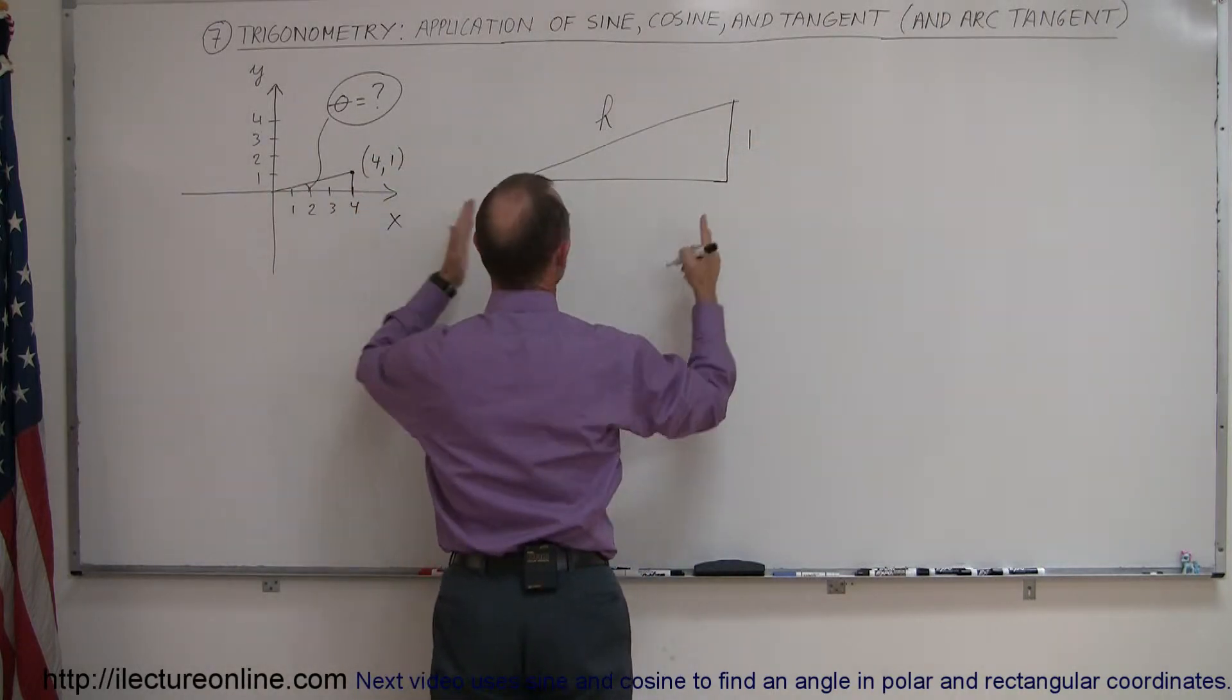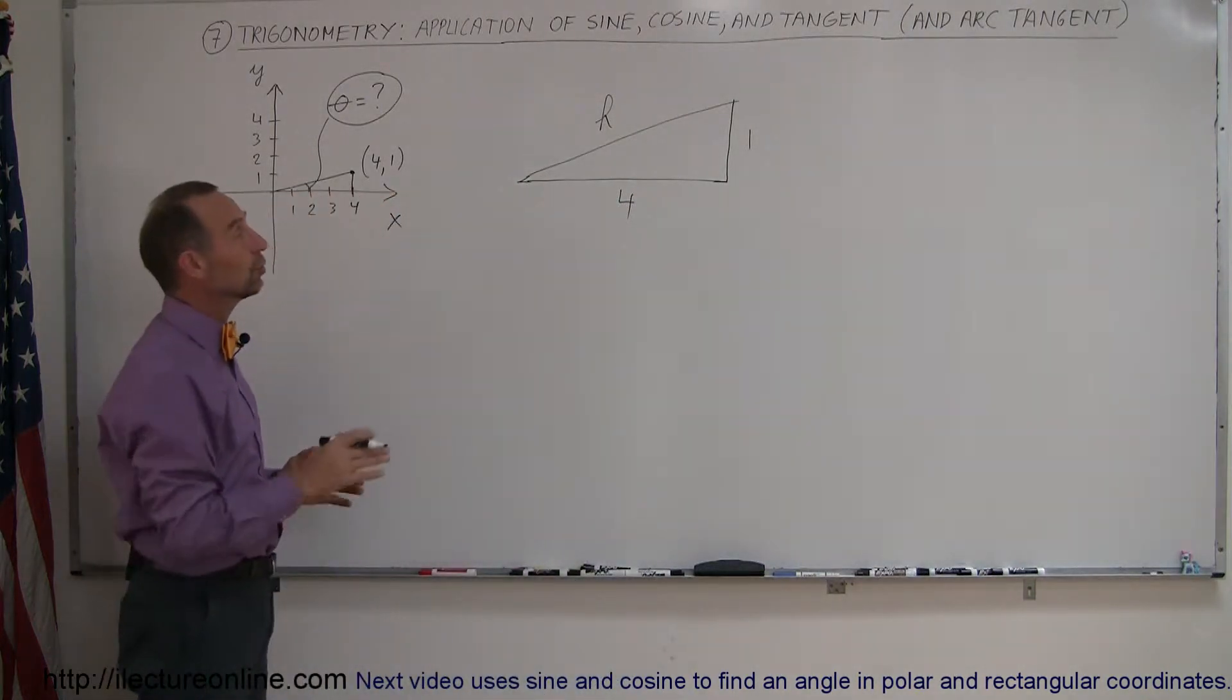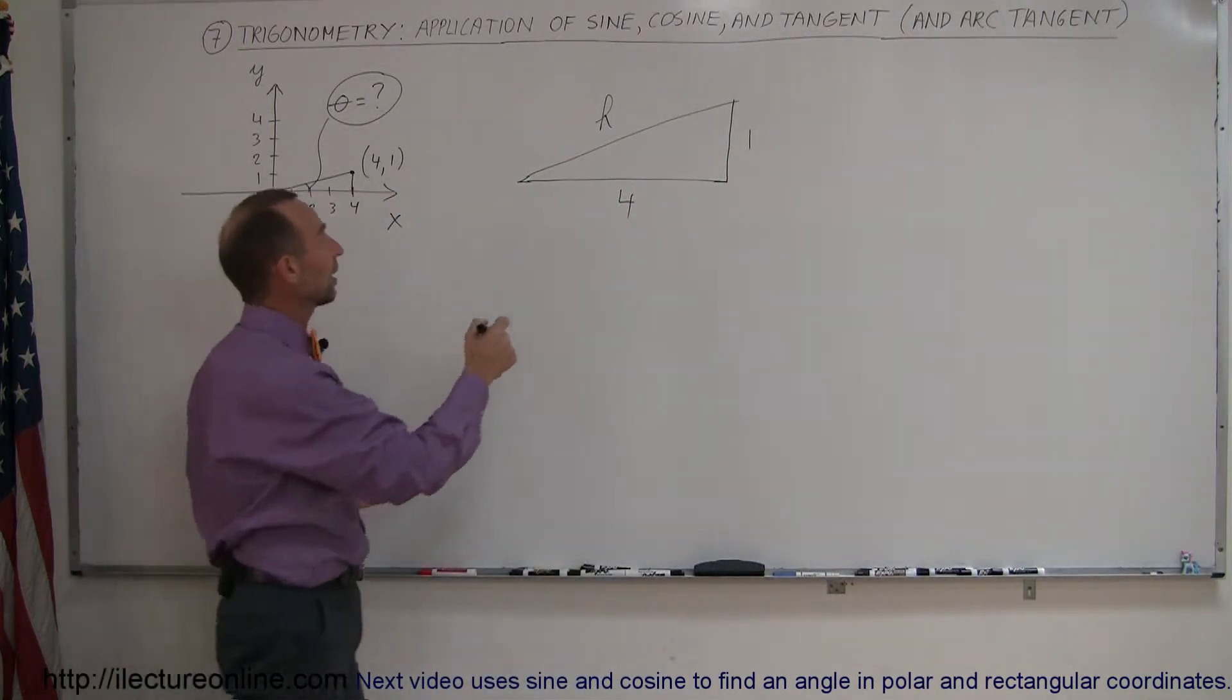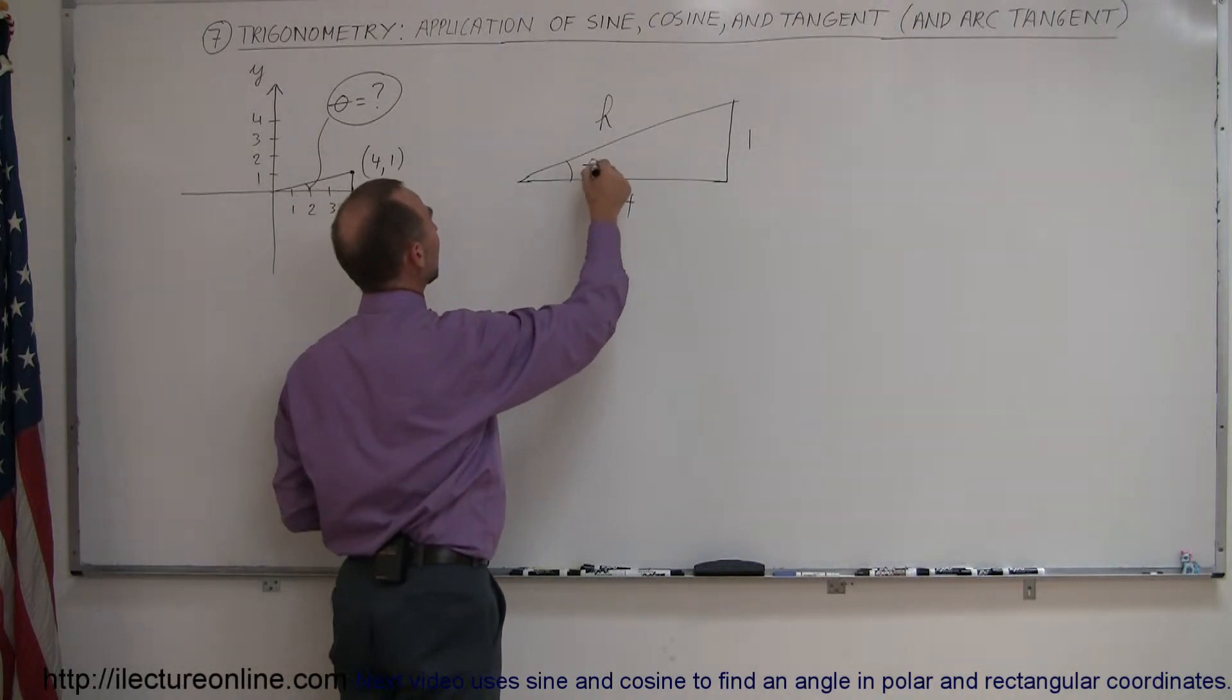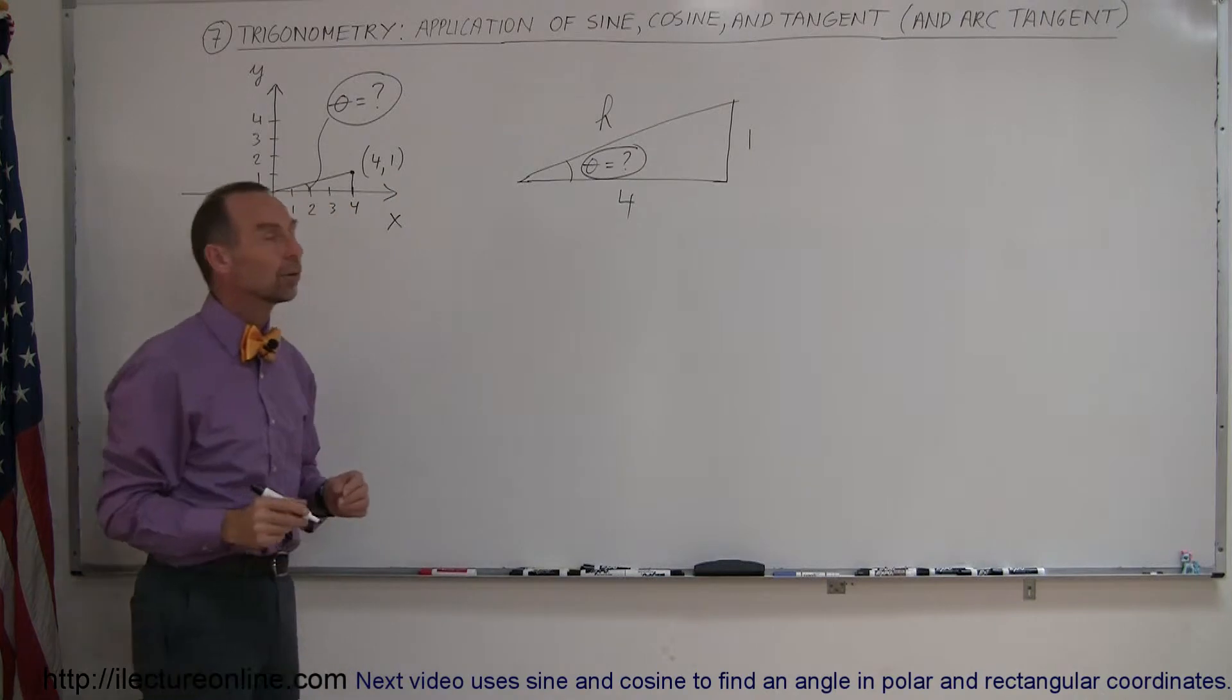And then the x-axis here, this distance right here, would be 4. So we don't know what H is. We do know the opposite side. We know the adjacent side. And of course, here's the angle theta. But in this case, we're trying to find out what the angle is. What is theta equal to?